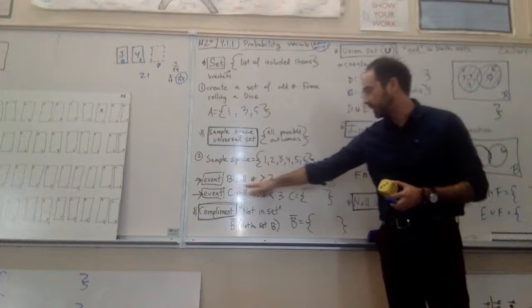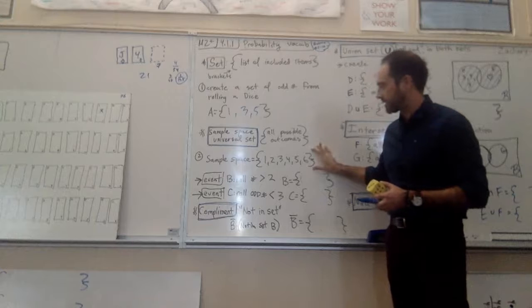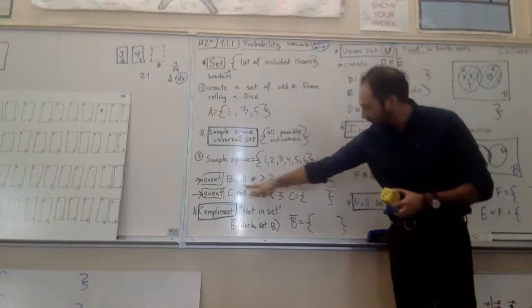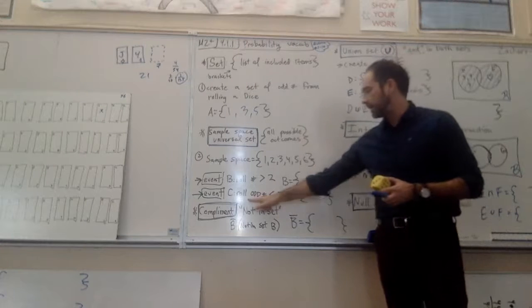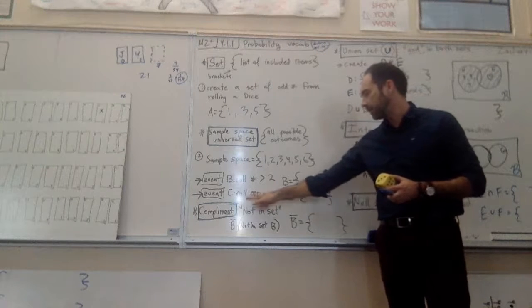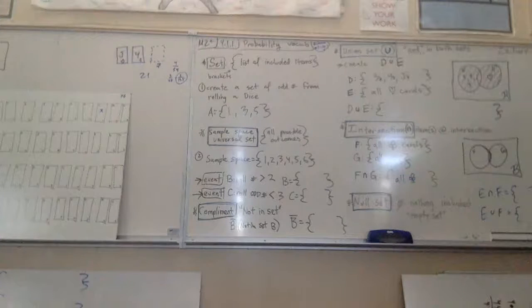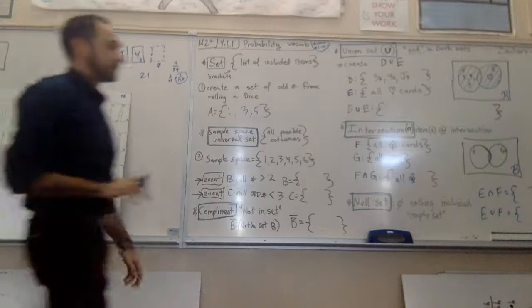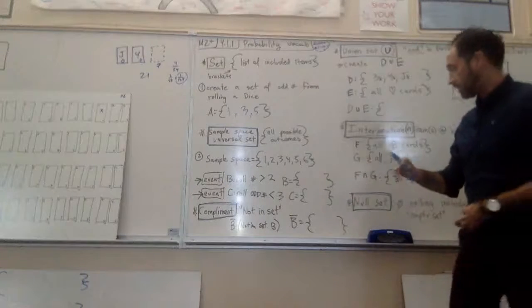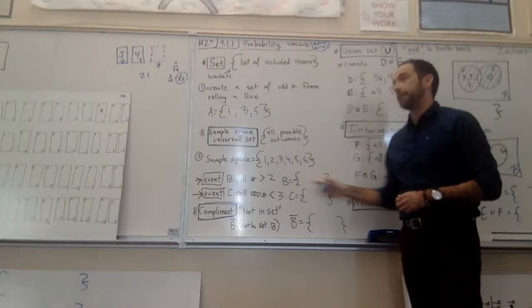Now we're going to create two new sets here. This one is going to be set B, is going to be rolling a number greater than two. I want you to go fill in set B from this sample space of the dice, rolling a number greater than two. Go fill those in right here. And then if you want to go to the next one, C is going to be roll an odd number less than three. Remember, it's the sample space. The possible options come from a dice - it's one, two, three, four, five, six.